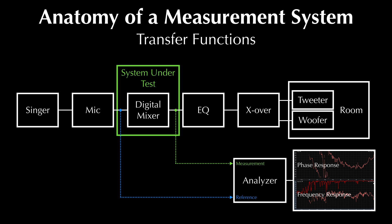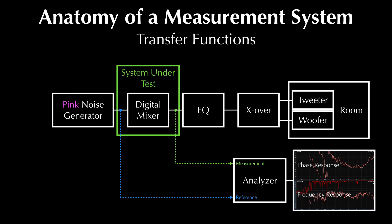For reasons that I'll discuss in that video, we often use something called pink noise as our signal when performing transfer functions. Pink noise sounds like this. We use a pink noise generator to do this, in which case the system might look something like this. More on that in the later transfer function video.